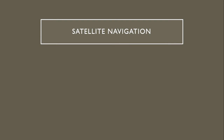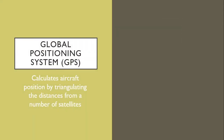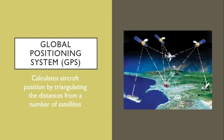Satellite navigation uses satellites rather than ground-based stations. An example of satellite navigation is the Global Positioning System, or what we know as GPS. It determines the position of an aircraft by triangulating the distances from a number of satellites.